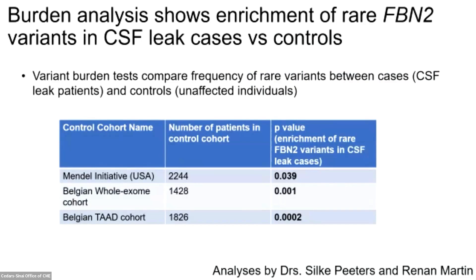With this in mind, we conducted burden tests to determine whether these rare fibrillin 2 variants are more common in the leak patients than in a variety of control cohorts. When we compared leak patients to the Mendel Initiative cohort (about 2,000 patients), the Belgian whole exome cohort (about 1,400 patients), and the thoracic aortic aneurysm and dissection cohort (about 18,000 patients), we saw a consistent signal for enrichment of rare fibrillin 2 variants in CSF leak patients.